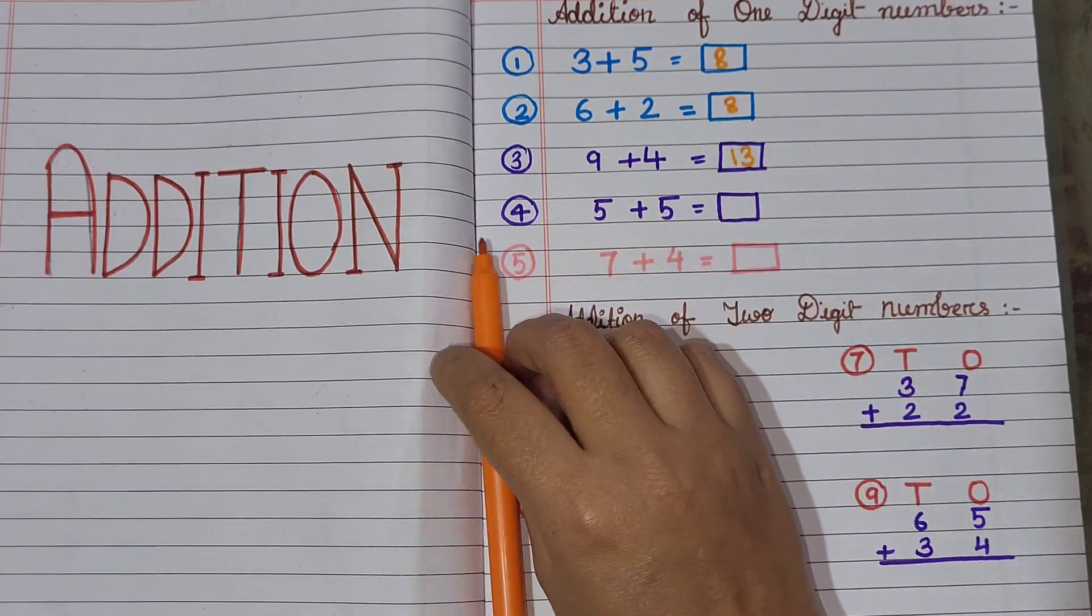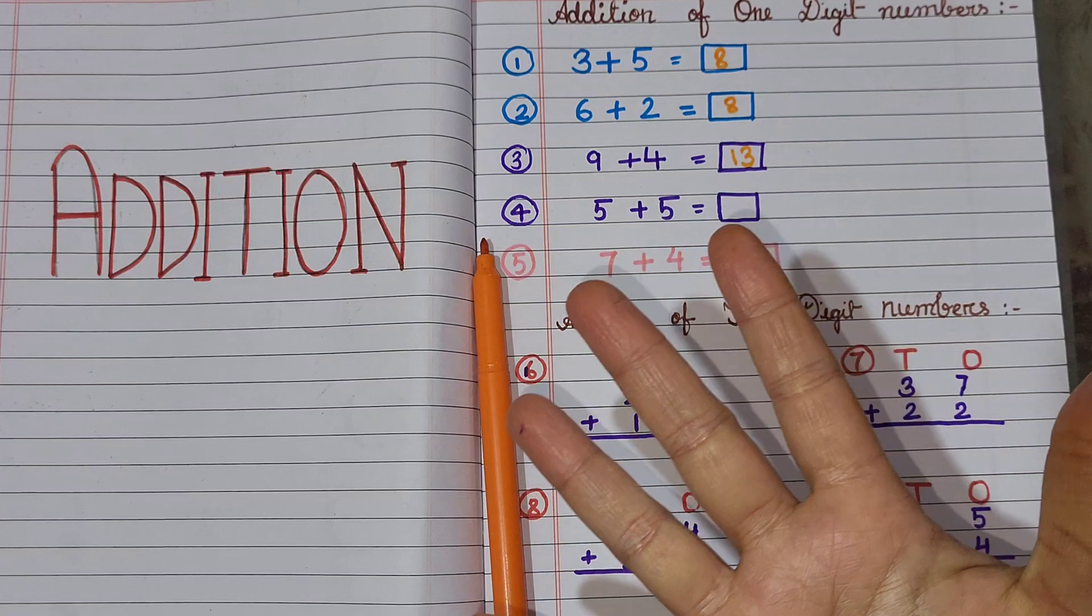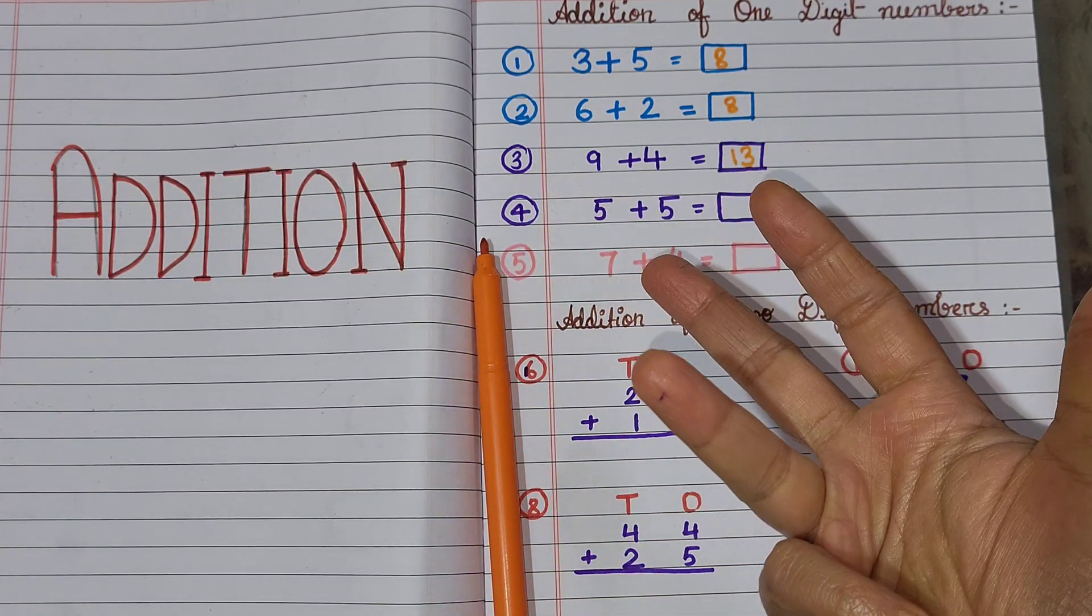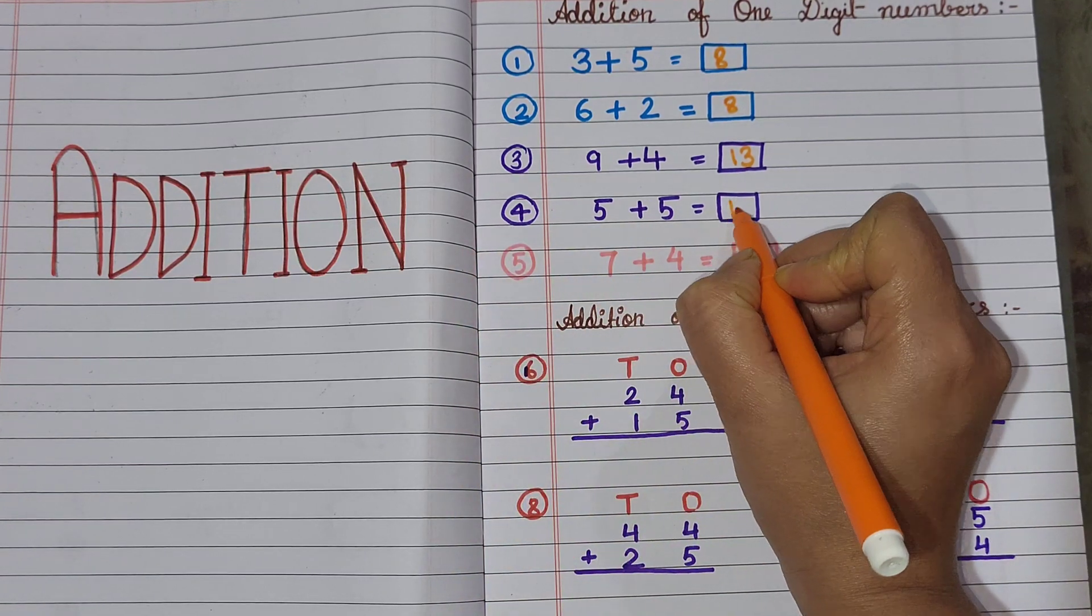Next, 5 plus 5. 5 in my mind and 5 fingers up. 6, 7, 8, 9, 10. 5 plus 5 equals 10.